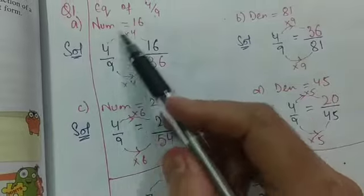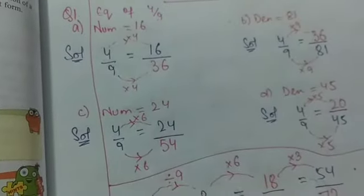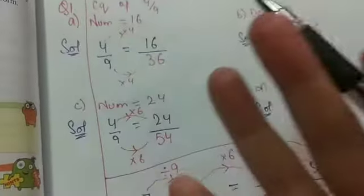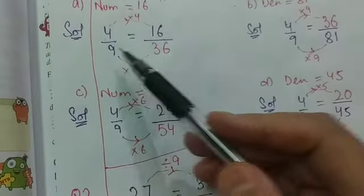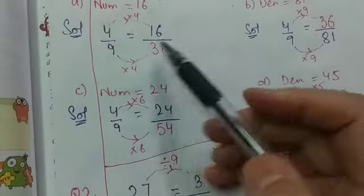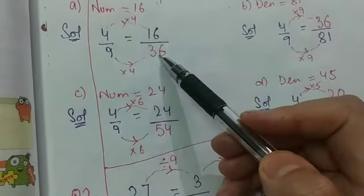Now it is equivalent that means I have to multiply the numerator with the denominator also multiply or divide whatever you are doing. So 4 multiplied by 4 is 16. That means this 9 multiplied by 4 will be my answer. So 9 multiplied by 4 is 36.